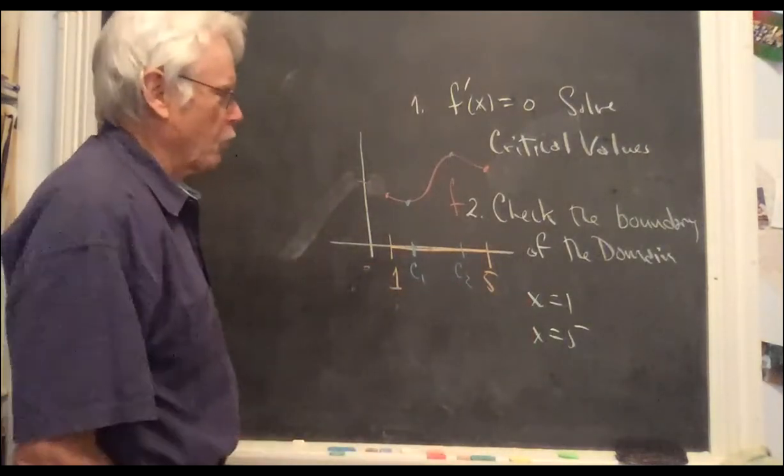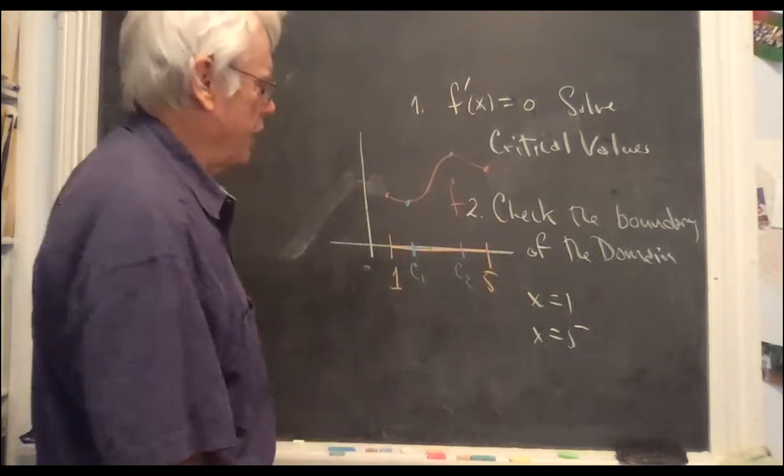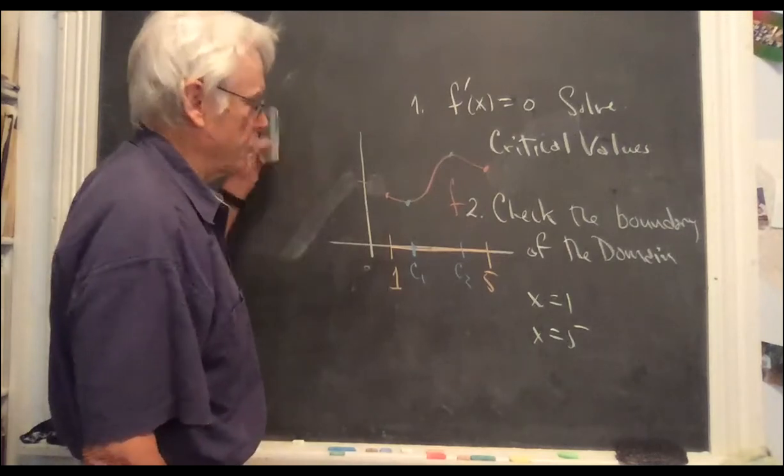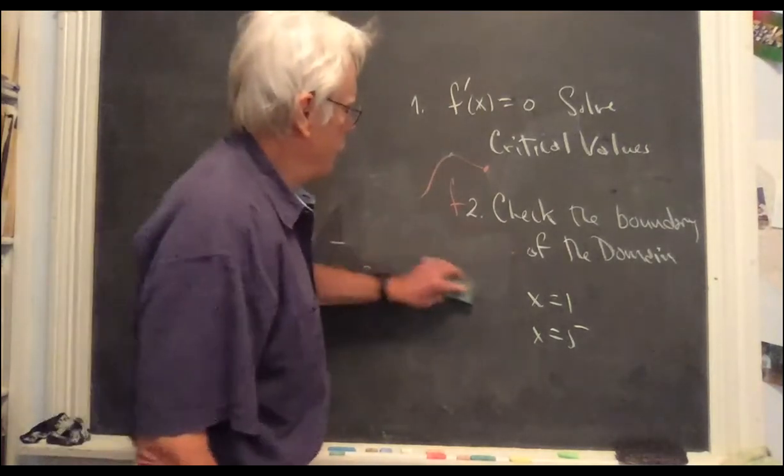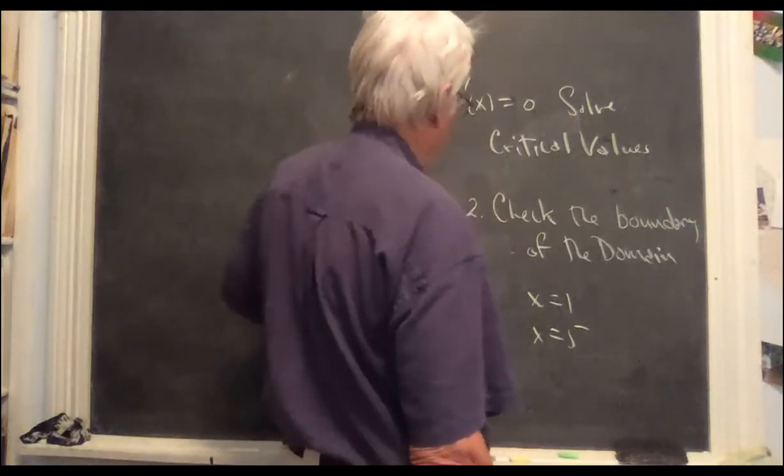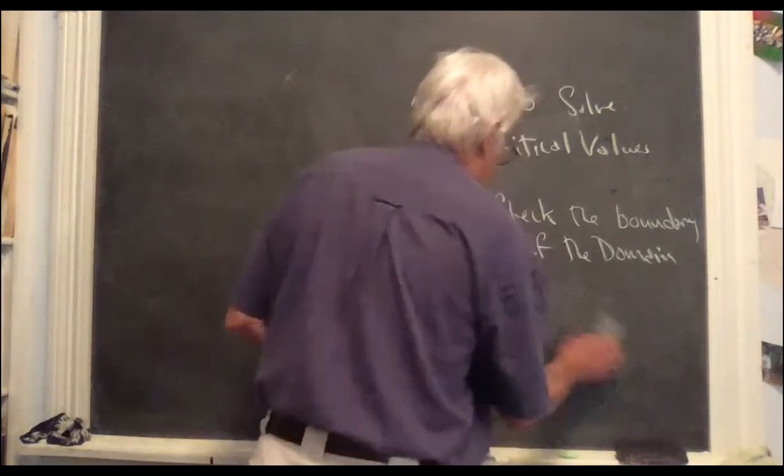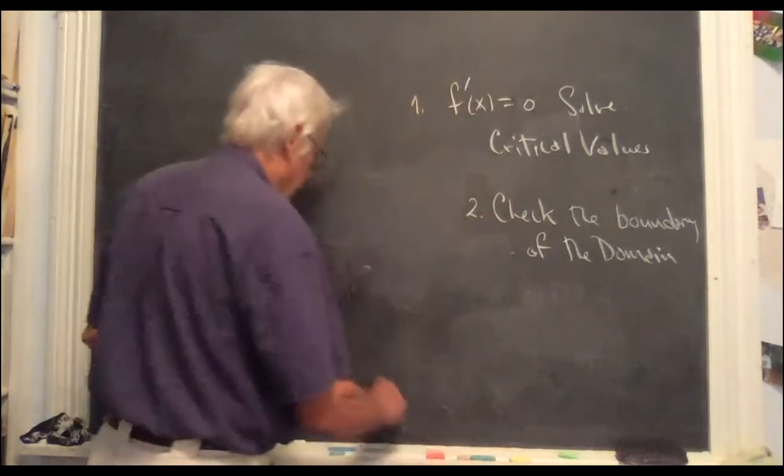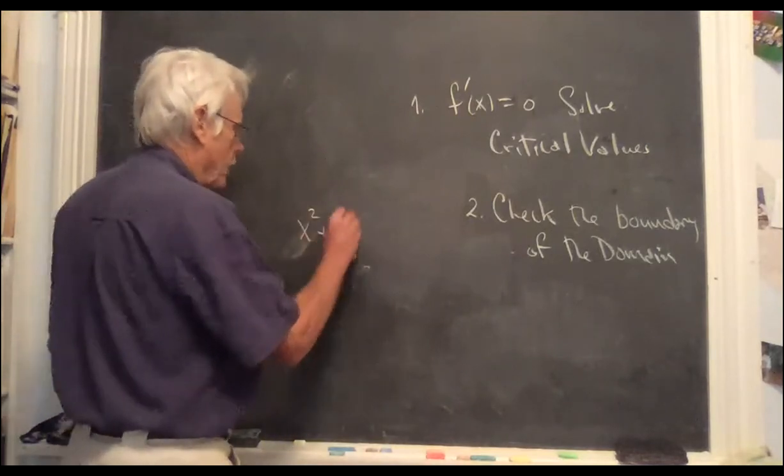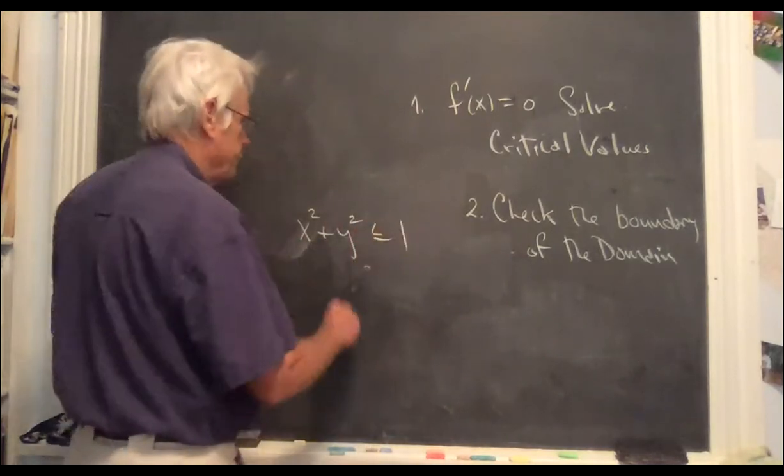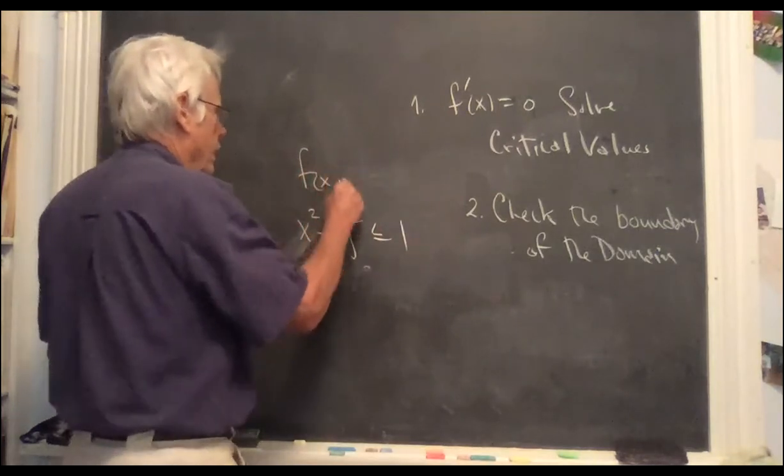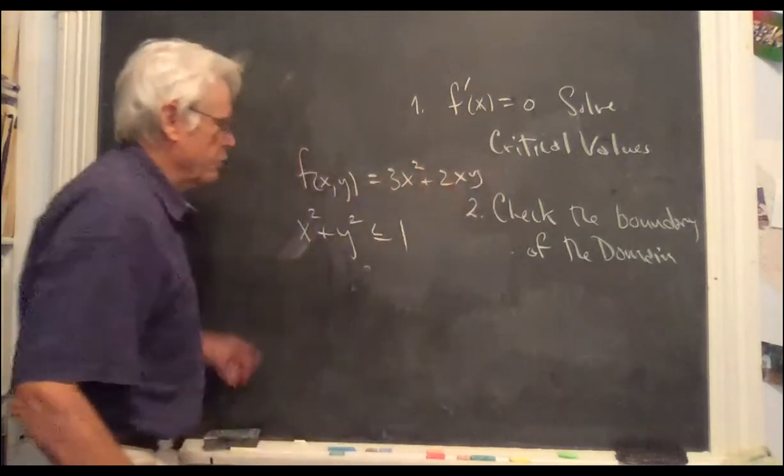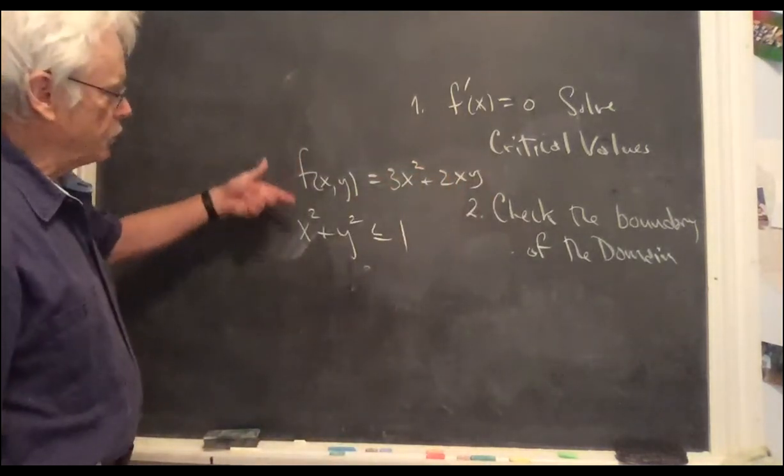So this is the short form of how you find maxes and mins in higher dimensions as well. But there's an issue in higher dimensions, and that is the boundary of the domain. So for example, the domain could be x squared plus y squared less than or equal to one.